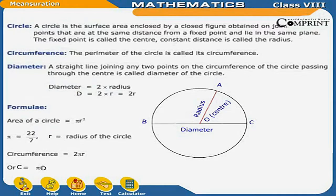Circle: A circle is the surface area enclosed by a closed figure obtained by joining all the points that are at the same distance from a fixed point and lie in the same plane. The fixed point is called the center, and the constant distance is called the radius. Circumference: The perimeter of the circle is called its circumference. Diameter: A straight line joining any two points on the circumference of the circle passing through the center is called the diameter of the circle.